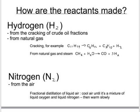Well as said before the hydrogen comes from the cracking of crude oil fractions which you may remember from module C1. And it also can be made from natural gas by reacting with steam. The actual reactions below here you don't need to know, you just need to know that it comes from cracking of crude oil or from natural gas.